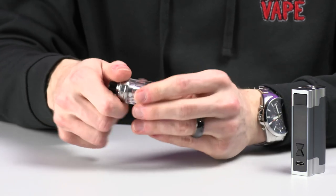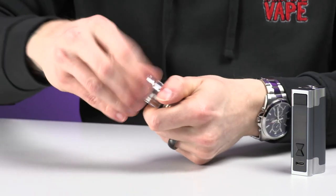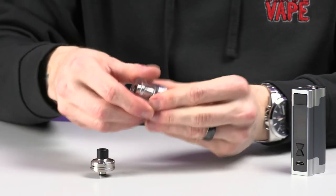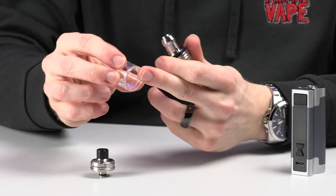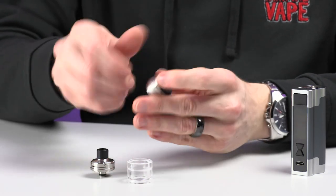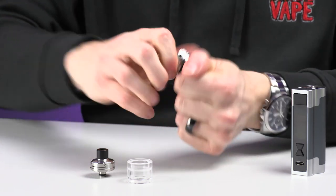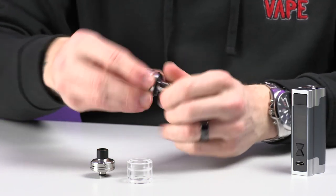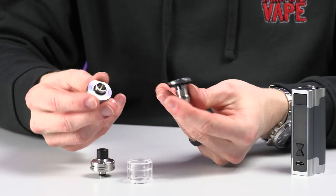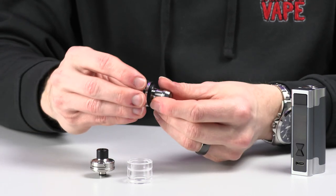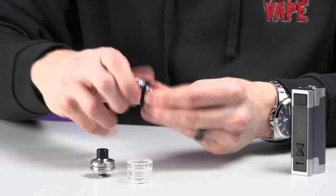Now really quickly, I'll show you how to dismantle the tank. So just unscrew the top and remove the tube, and then on the base you can remove the airflow as well. So that is how you dismantle it if you wanted to clean it out or anything like that.